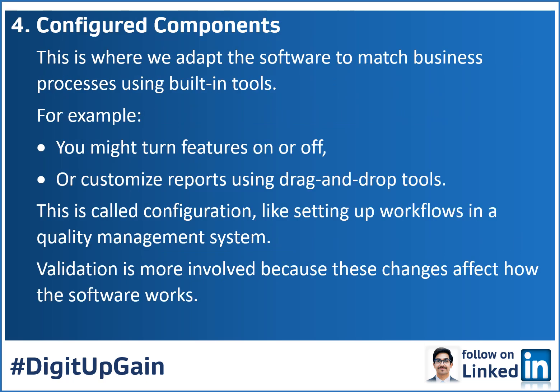Next in the hierarchy is Category 4: configured components. This is where we adapt the software to match business processes using built-in tools. For example, you might turn features on or off, or customize reports using drag-and-drop tools. This is called configuration — like setting up a workflow in a quality management system. Validation is more involved here because these changes can affect how the software works.